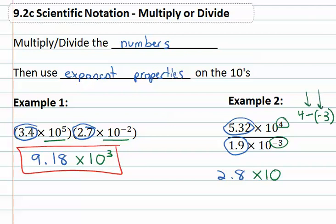A common error people will do is four minus three and get one. We want to subtract negative three which means we add the opposite. Four plus three is seven. And so when we divide we end up with 2.8 times ten to the seventh.